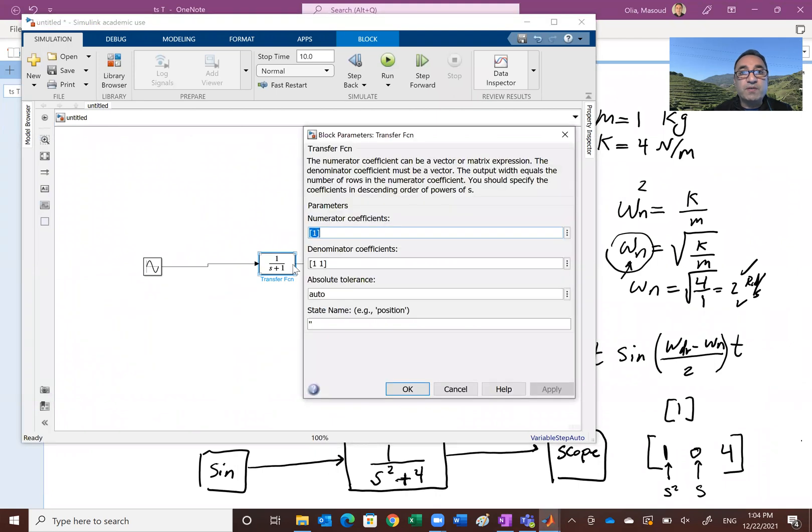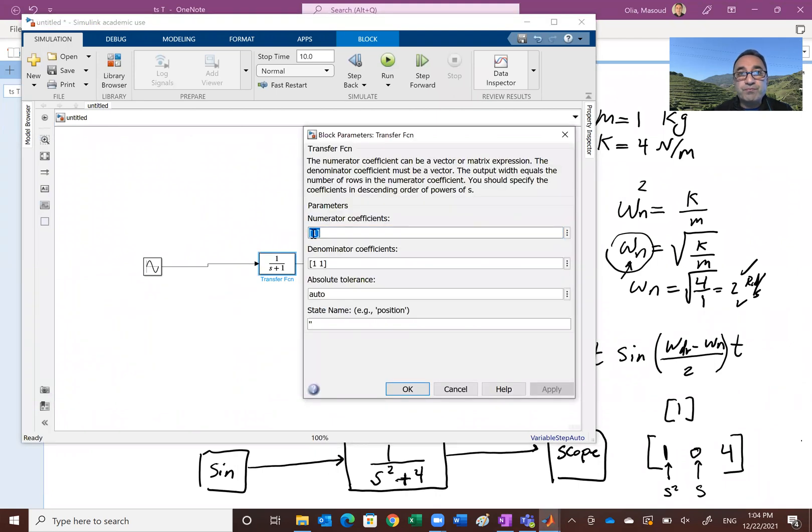And in the denominator, we should have a one for s squared term, a zero for s term, and a four. So this is one, zero, four. Let's do that. So we double click on this guy. So we need a one in the numerator. And as I said, one, zero, and four. If you just put two items, it'll take it as a first order system. This is a second order system. We have a mass and spring. So we just say apply.